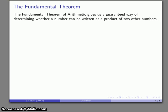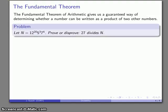The Fundamental Theorem of Arithmetic gives us a guaranteed way of determining whether we can write a number as a product of two other numbers. For example, let's consider N to be this mess, and we want to prove or disprove: 27 divides N.